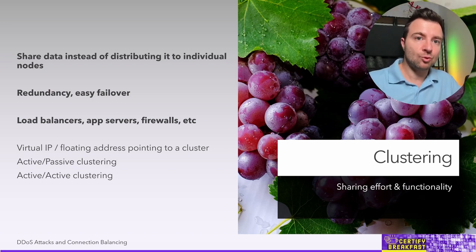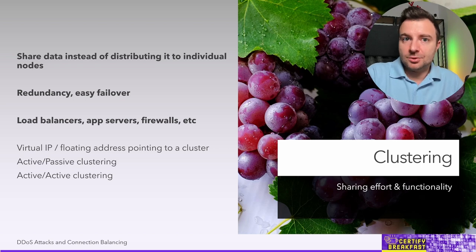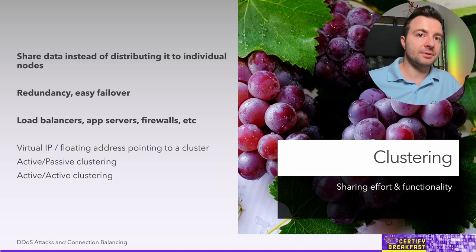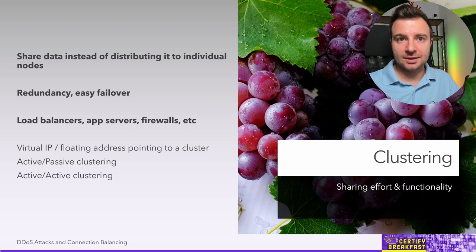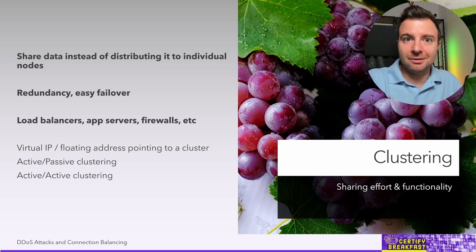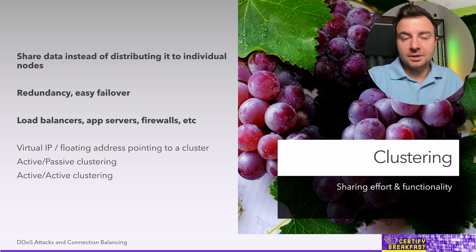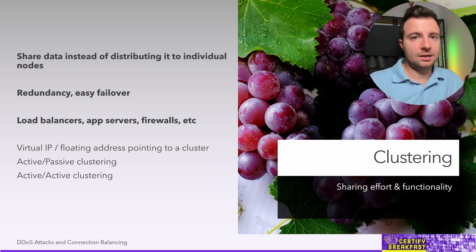This brings us to active-passive versus active-active clustering. With active-passive, one device answers all requests while one or more passive devices periodically check via a heartbeat whether the active device is still running. The moment the active device fails, a passive device immediately takes over the active role. With active-active clustering, all members of the cluster are actively serving requests simultaneously, and if one fails, the remaining devices take over its role.